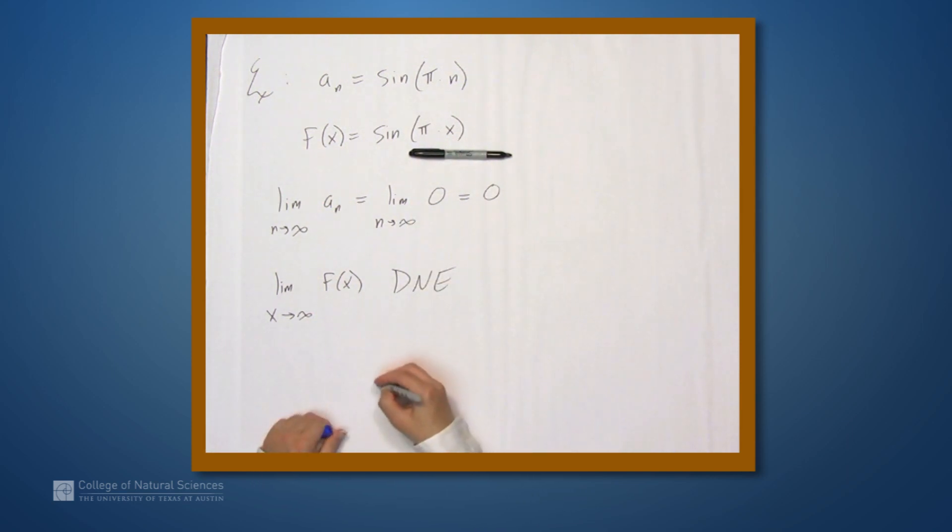And so to see why, think of a graph of sine, something like this. Well, the graph of the function does not approach a single value, because it keeps oscillating back and forth. But if you pick the sequence correctly, as we do here, we always hit zero.